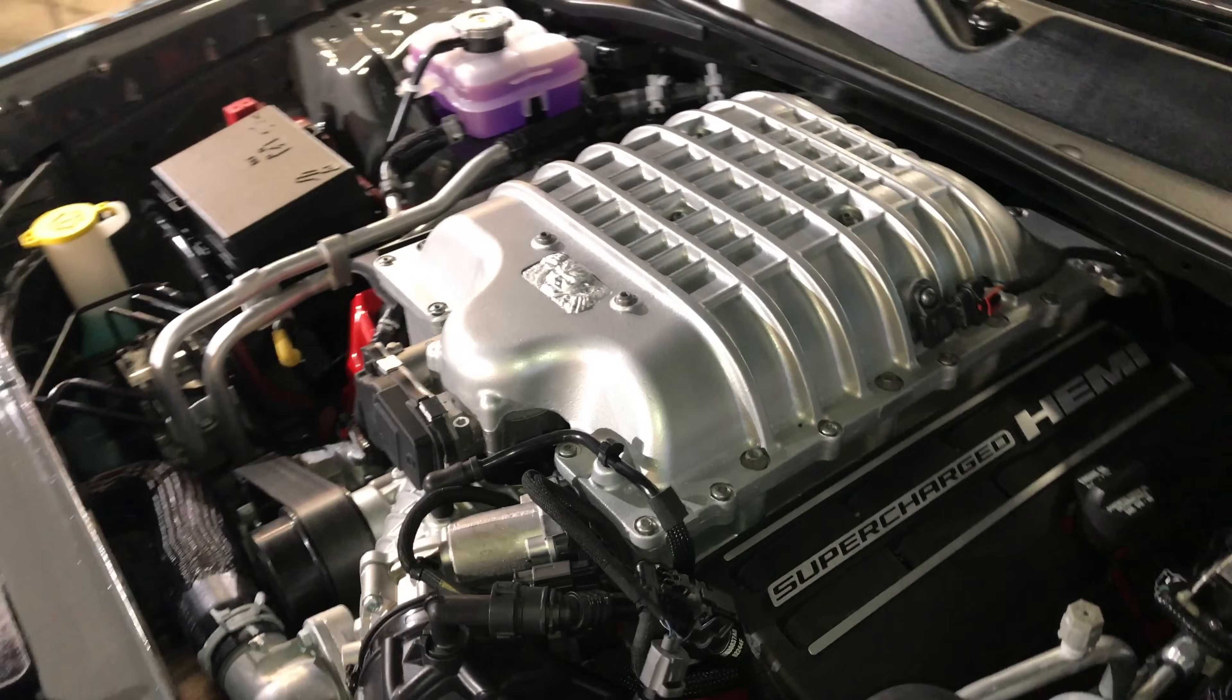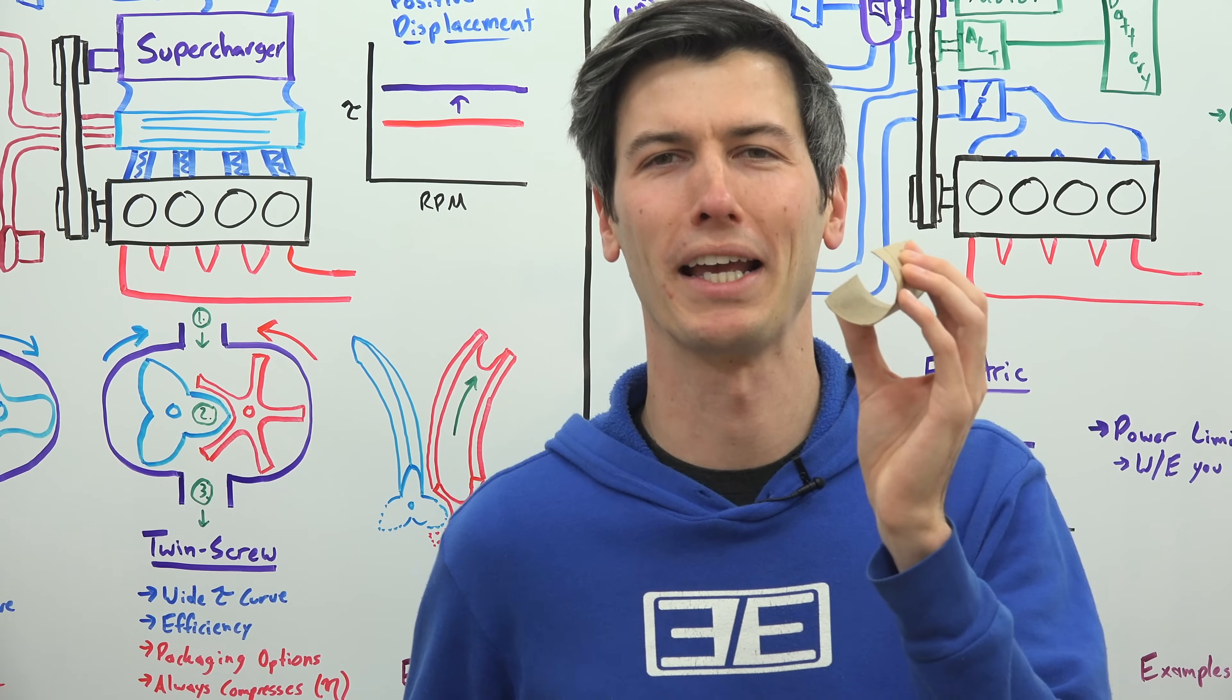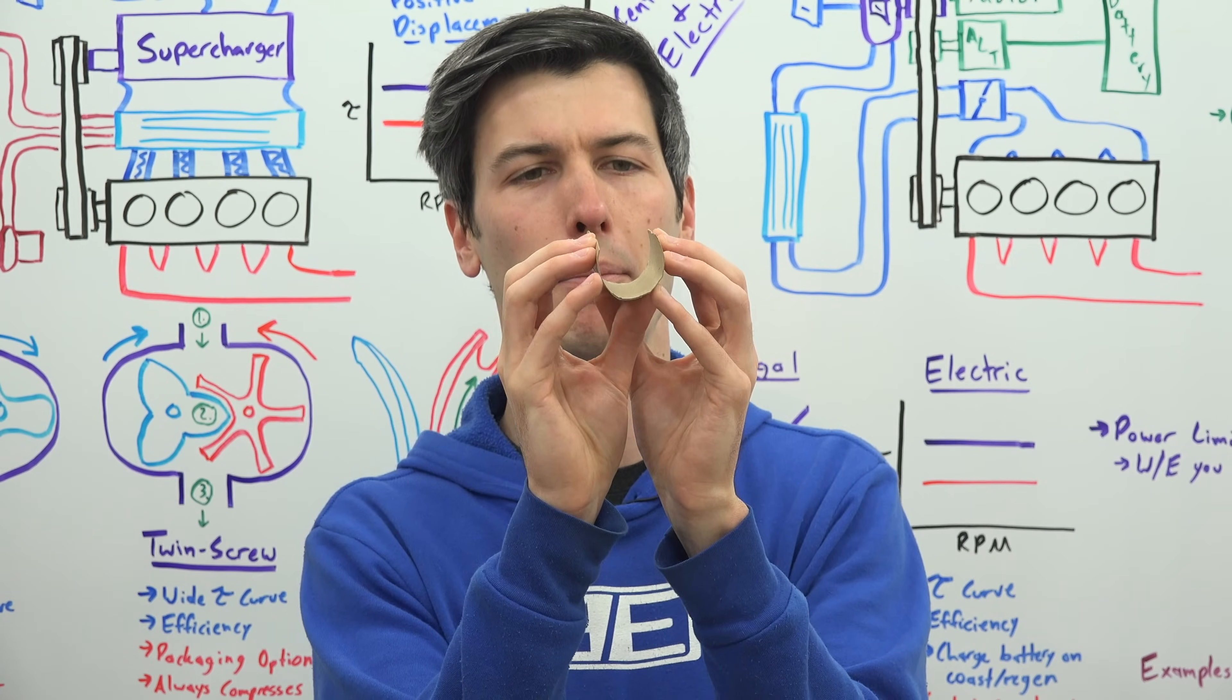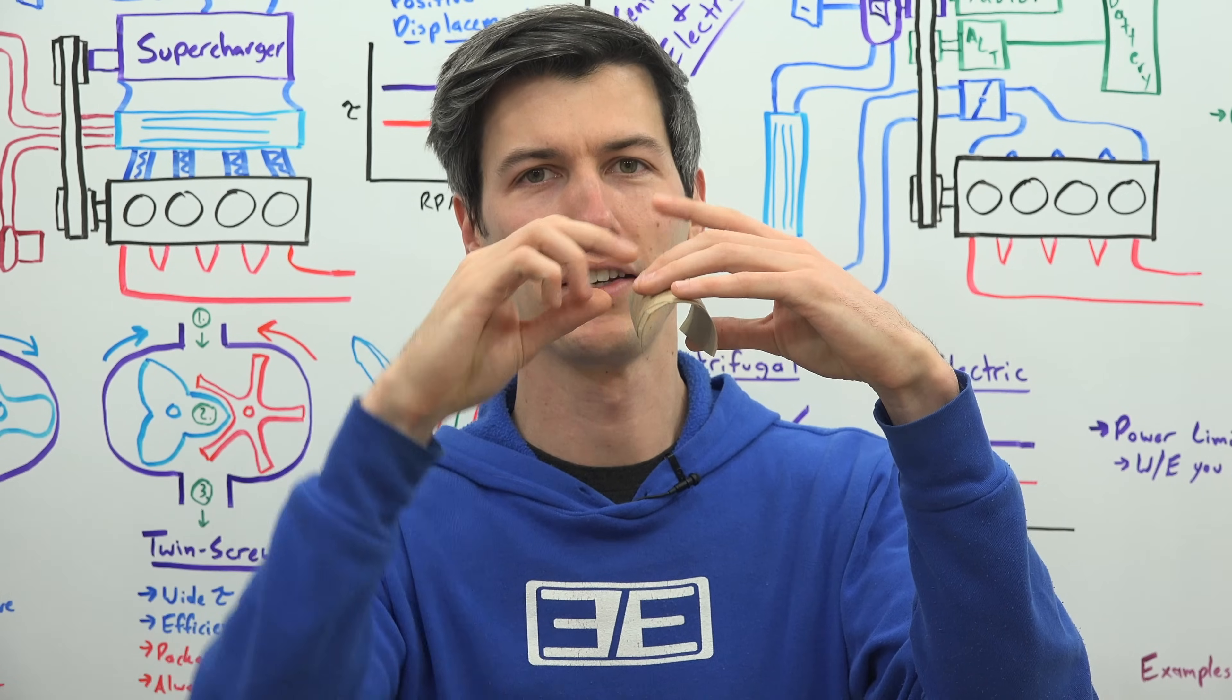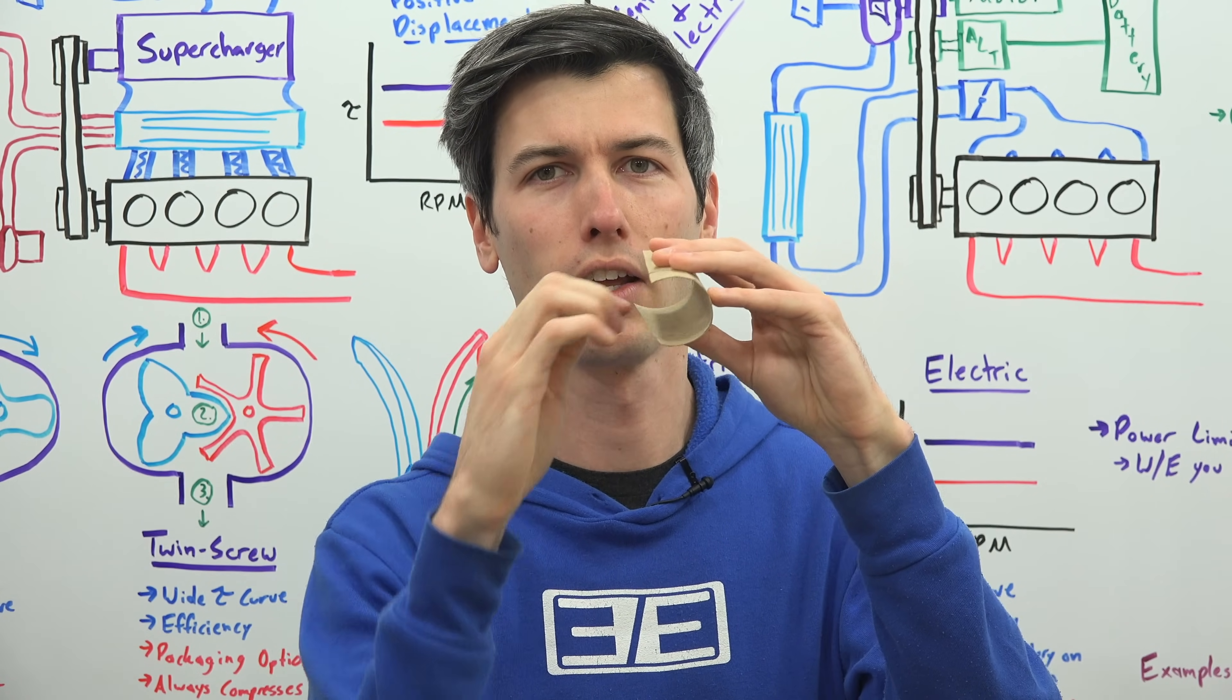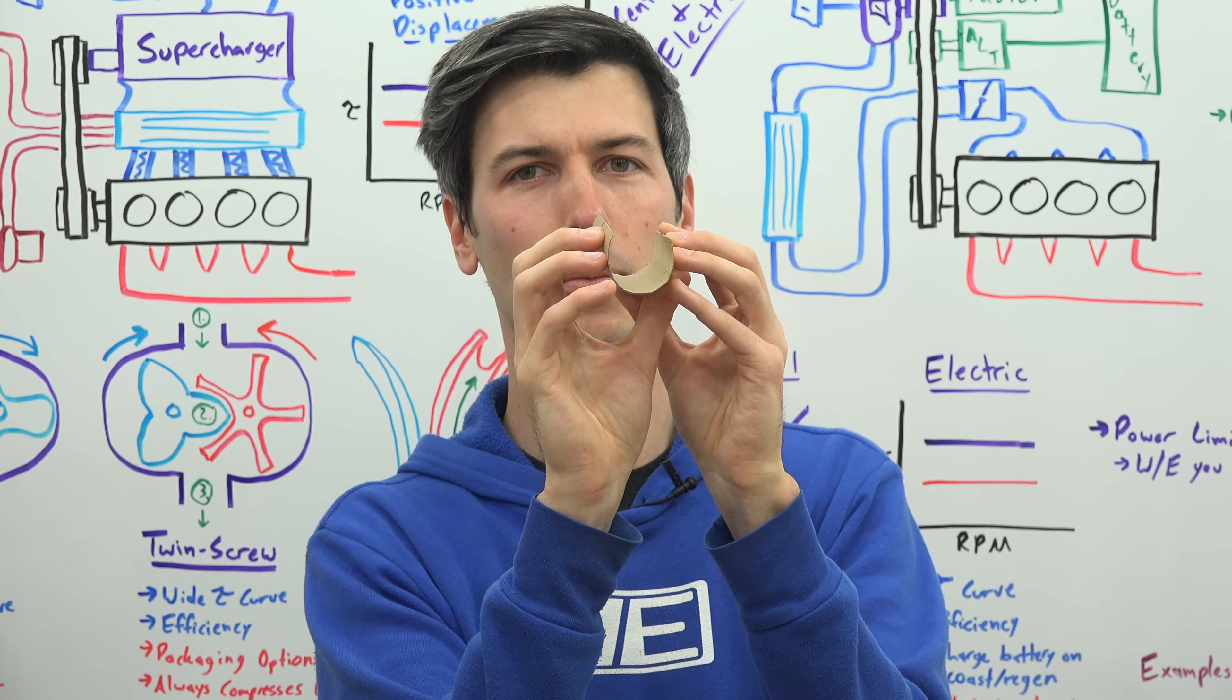Now I have an egg and part of a toilet paper roll to help explain this further. With the Roots style supercharger basically you just have a pocket that you allow air to fill, and then you transfer that pocket of air down below the supercharger. And then the lobe from the other rotor meshes with it so no air can escape back up past these rotors. Then you take in some more air,